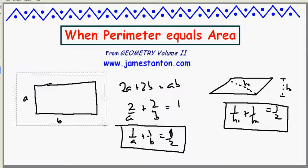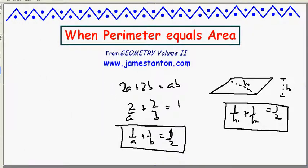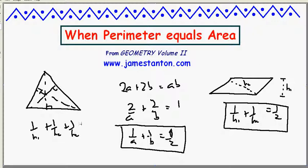Or another challenge for you. Prove that a triangle has perimeter equal to area if you measure three heights, call them H1, H2 and H3. Area equals perimeter if and only if 1 over height 1 plus 1 over height 2 plus 1 over height 3 is again a half.